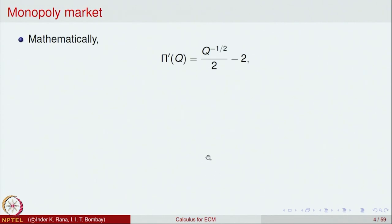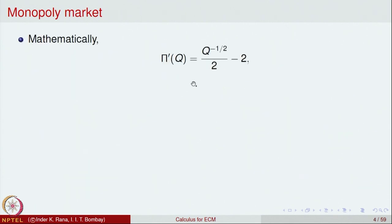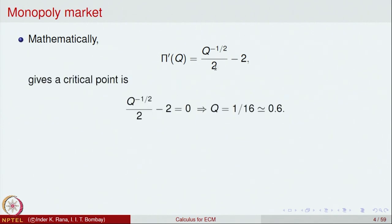To verify mathematically, we look at the derivative of the profit function: π'(Q) = (1/2)Q^(−1/2) − 2. Setting this equal to 0, we get Q^(−1/2) = 4, so Q = 1/16 ≈ 0.06. That is the point where possibly the maximum value occurs. One can verify it by the second derivative test or check from the first derivative.